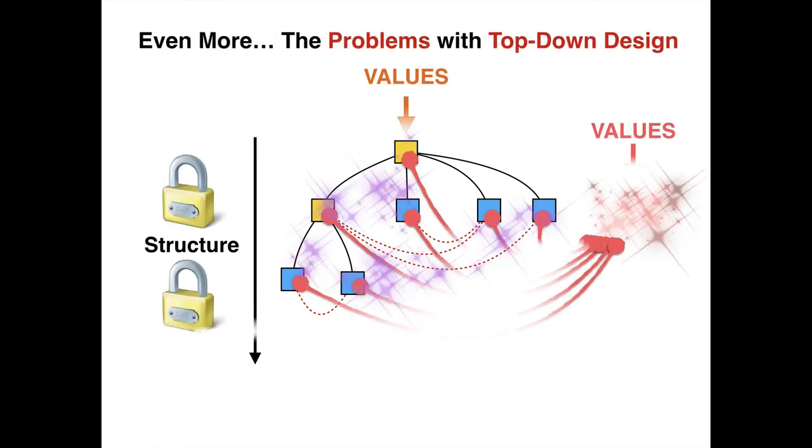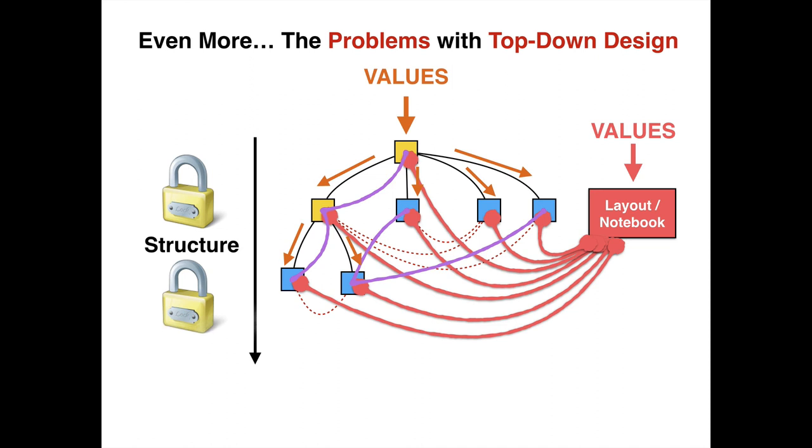The biggest problem with top-down design is when people combine all these techniques together. When they all come together at the same time, things happen that people don't understand because there's embedded logic and dependencies that are missing or need to be reestablished to work correctly.